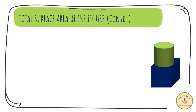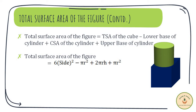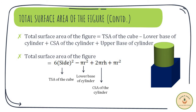Thus, the total surface area of the figure will consist of the total surface area of the cube minus the lower base of the cylinder for the overlapping surfaces, plus the curved surface area of the cylinder, plus the upper base of the cylinder. Substituting the formulas, we get: total surface area = 6 × side² (total surface area of cube) minus πr² (lower base of cylinder, overlapping with one side of cube) plus 2πrh (curved surface area of cylinder) plus πr² (area of upper base of cylinder).